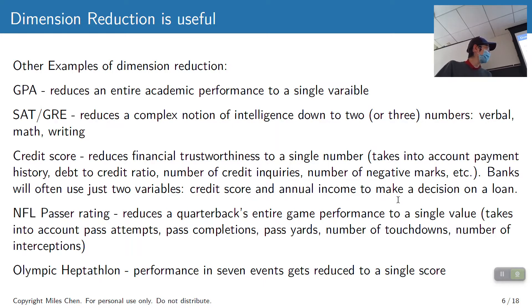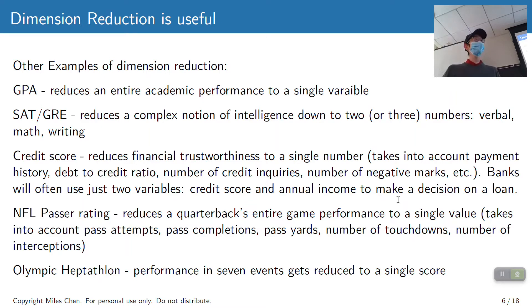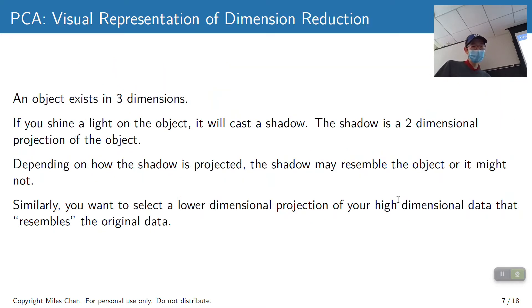The NFL passer rating takes how many yards were thrown, how many passes were attempted, how many were completed, how many interceptions — all combined into a single number to compare game performances. Another example: the Olympics decathlon and heptathlon involve several different events, but when it comes time to rank gold, silver, bronze, you have to reduce it down to one value. These are all dimension reduction examples.